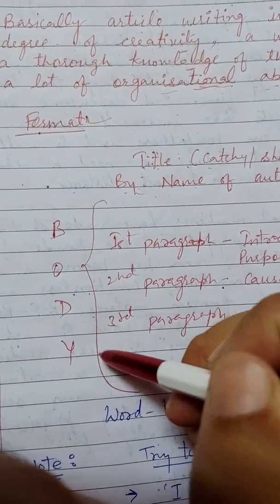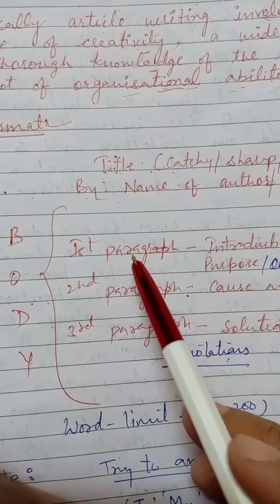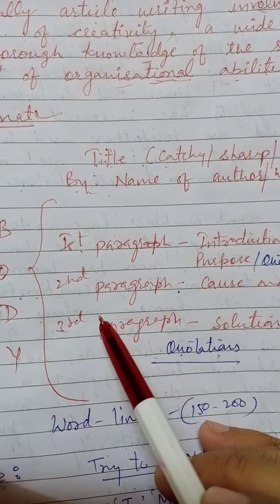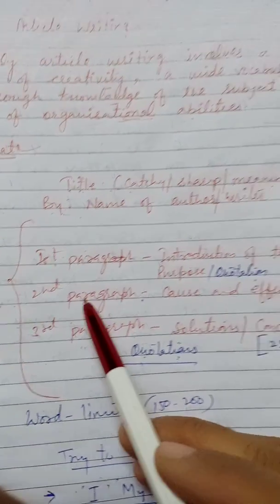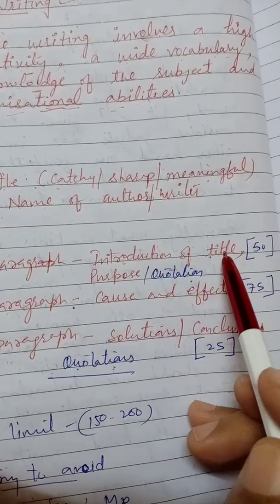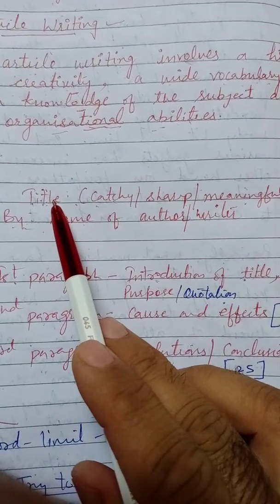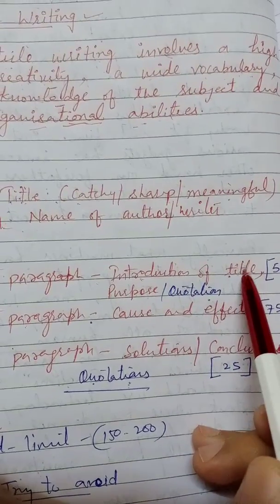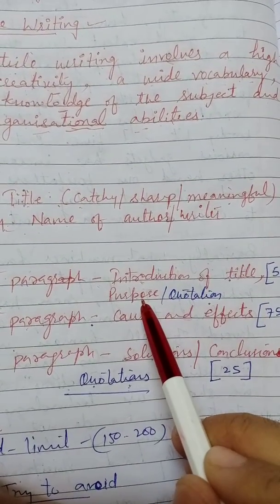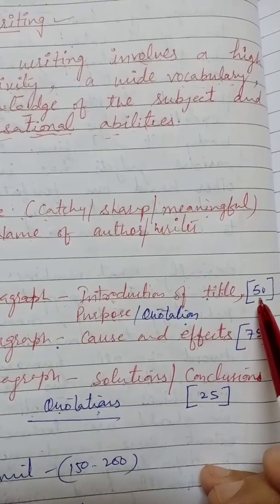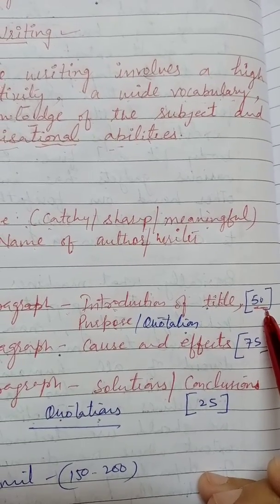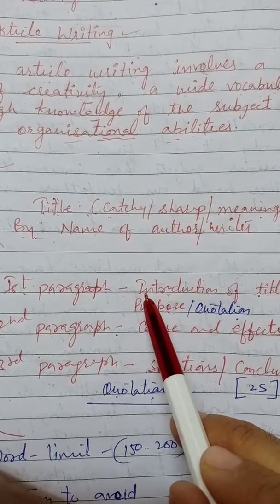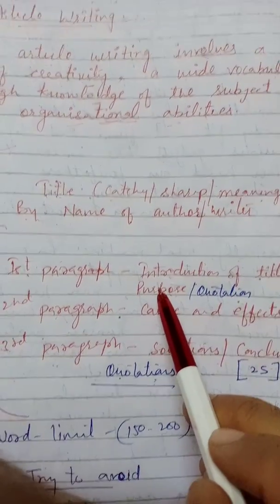Now the real body of the article gets started. We need to write three paragraphs. The first paragraph is for the introduction of the title — whatever the title itself suggests should be written in the very first paragraph, along with the purpose of the title. Approximately 50 words or more in the first paragraph. It is mandatory to introduce your title at the very beginning of the article.